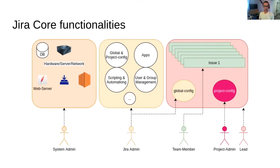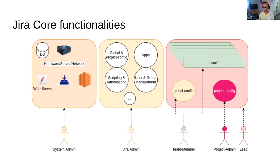The Jira admin takes care of the governance of the platform. He's responsible for deciding which projects can be created in Jira, which departments should use Jira, and taking care of the apps that can be installed. He will receive requirements from different departments and evaluate third-party apps to satisfy those requirements — testing them, negotiating with stakeholders, and deciding which app to install rather than installing everything requested. He will also help team members automate some tasks with scripting.